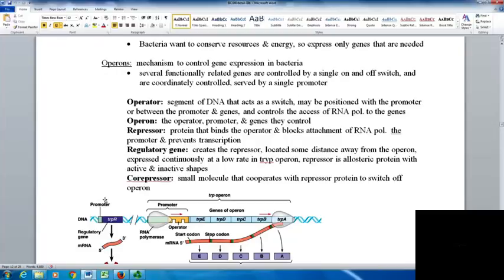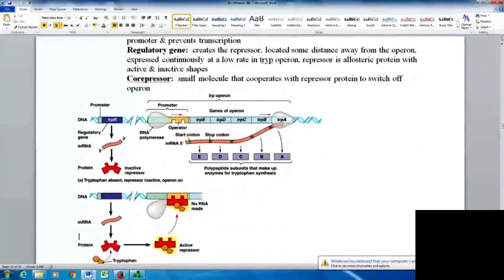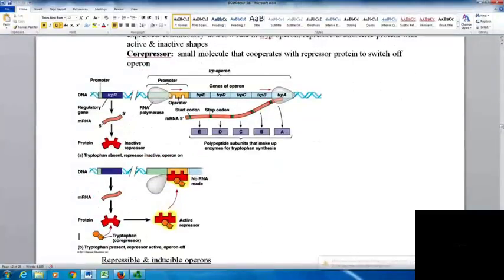The regulatory gene is located some distance away from the operon and is expressed continuously at a low rate. In the tryptophan operon, the repressor is an allosteric protein with active and inactive shapes. The co-repressor is a small molecule that cooperates with the repressor to switch off the operon.